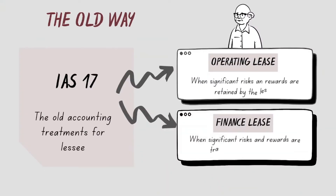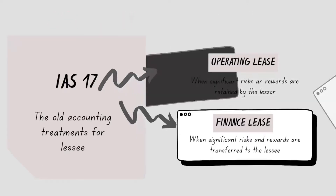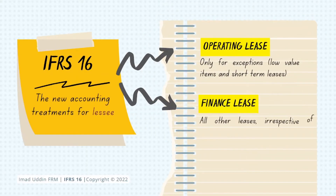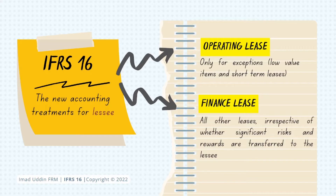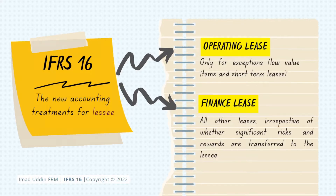Before IFRS 16, we had to decide whether a lease is a finance lease or an operating lease, for both the lessee and the lessor. But under IFRS 16, a lessee has to treat all leases as a finance lease. They get no operating lease treatment except for low-value items and leases with a term of less than 1 year. This is a drastic change which results in the recognition of a right-of-use asset for almost all leases in the books of the lessee.